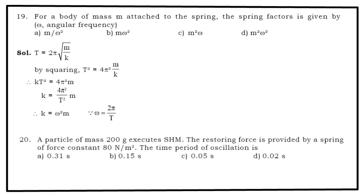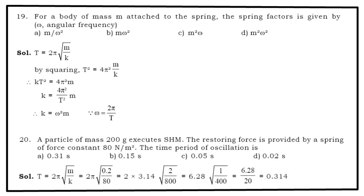A particle of mass 200 gram executes SHM. The restoring force is provided by spring of force constant 80 N per meter square. The time period of oscillation is - options A, B, C, D are right in front of you. Now we know that T = 2π√(M/K). Now you put the values of M and K in the expression. You get T = 0.314. So option A is the correct answer.